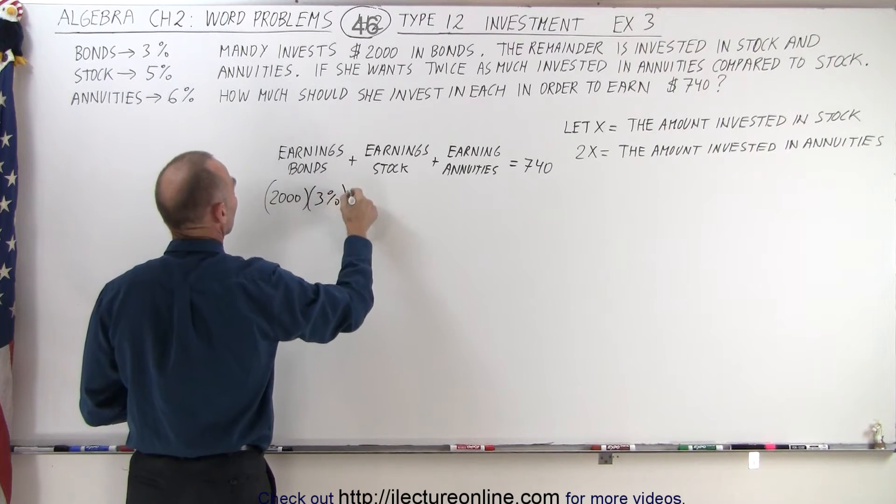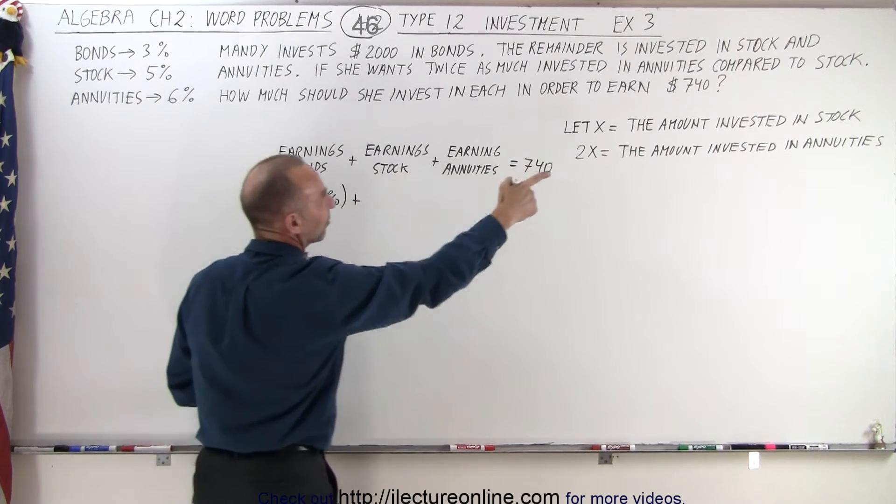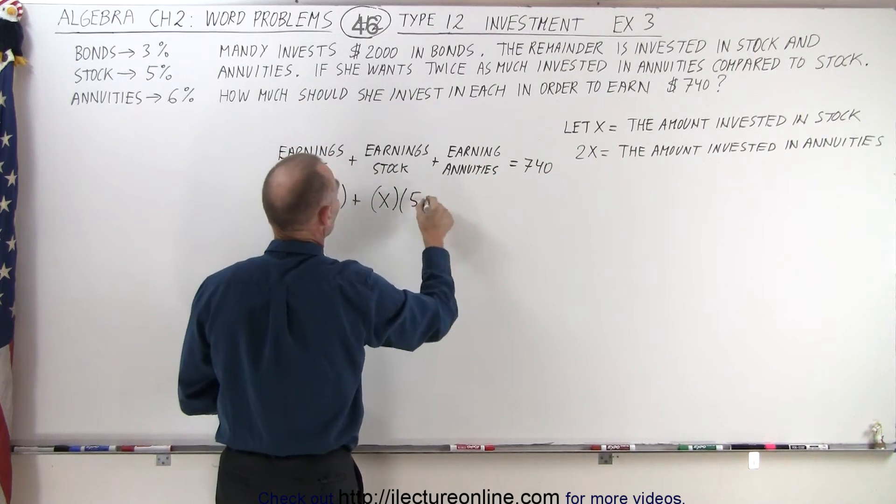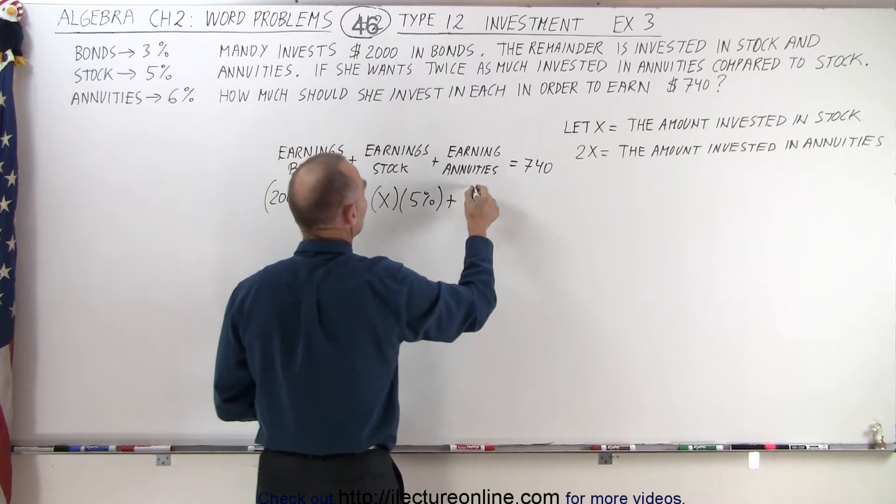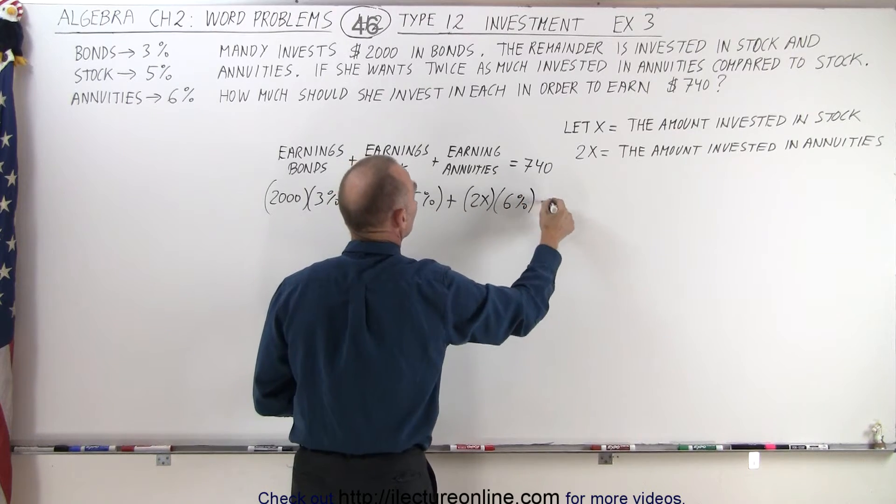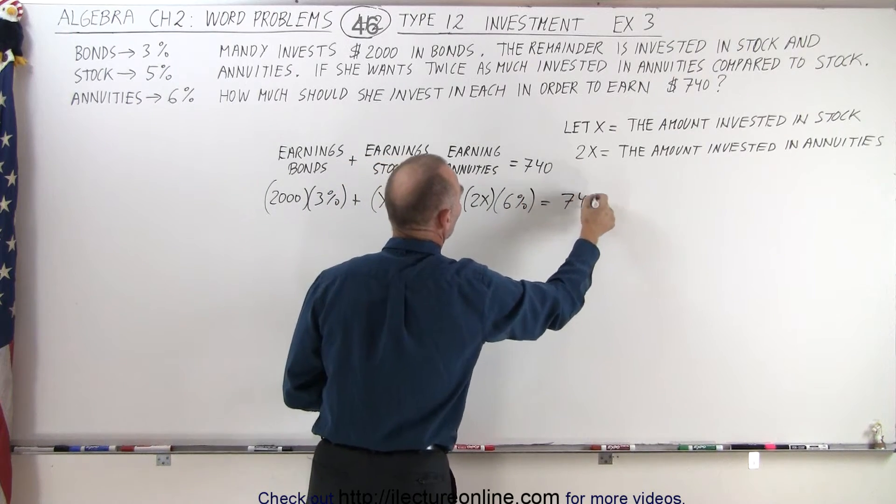Plus for stock, the amount invested would be X times the rate, which is 5%, plus the amount invested in annuities, which would be 2X, times the percentage of earnings equals a total of $740.